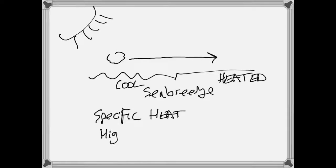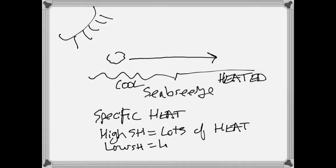If a substance has a high specific heat, it needs lots of heat to change its temperature. If it has a low specific heat, it needs very little heat to change its temperature. On a bright sunny day, land has that low specific heat, which means it takes only a little bit of heat to raise its temperature dramatically. So with a lot of heat coming down and a low specific heat threshold, the temperature of the land changes rather dramatically — it gets really, really hot.